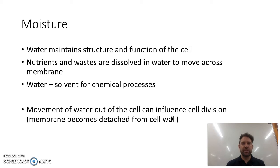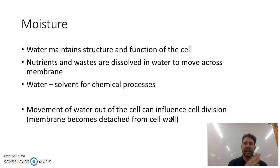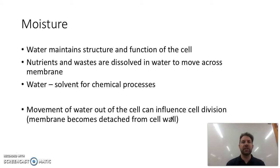Moisture or water content affects the structure and function of the cells because nutrients and waste are dissolved in water and move across the membrane in water, so it's really important to have the right amount. Water is also the major solvent for chemical processes. Movement of water in and out of the cell can also influence cell division if the membrane becomes detached from the cell wall.